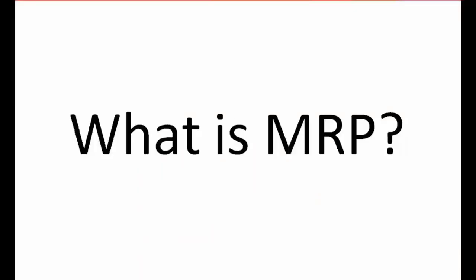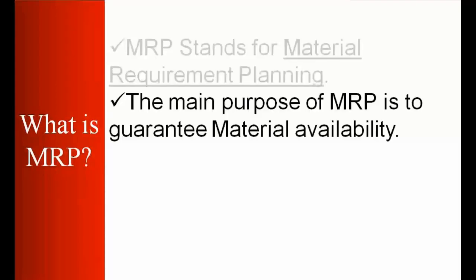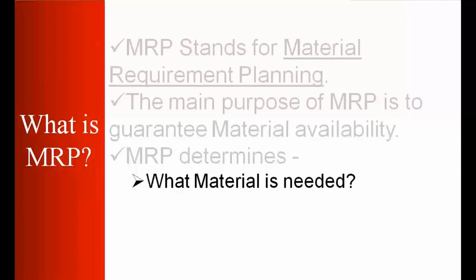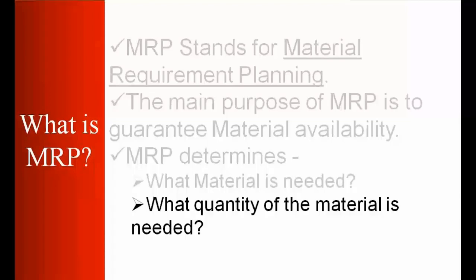First of all, we'll start with what is MRP. MRP stands for material requirement planning. As the name is saying, requirement planning. The system will be using this tool to plan all the procurement process, whether in-house or external, automatically using the MRP system. The main purpose of MRP is to guarantee material availability. MRP determines what material is needed, what quantity of the material is needed, and when the material is needed. So basically three things: it will find out what material is required, how much, and when, whether after one week, after 10 days, tomorrow.